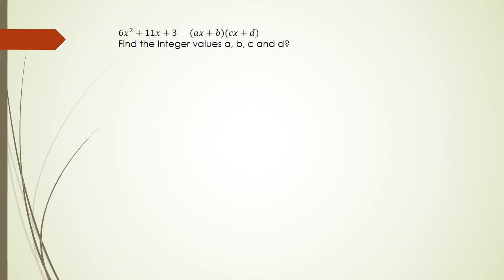The question we're going to be looking at is this particular one here where 6x² + 11x + 3 = (ax + b)(cx + d). So what we're trying to work out is we've got to factorize the quadratic first and then show what a, b, c, and d are.